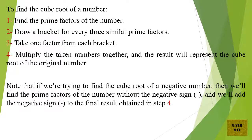To find the cube root of a number: 1. Find the prime factors of the number. 2. Draw a bracket for every 3 similar prime factors. 3. Take one factor from each bracket. 4. Multiply the taken numbers together, and the result will represent the cube root of the original number.